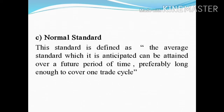The next standard is normal standard. This standard is defined as the average standard which it is anticipated can be attained over a future period of time, preferably long enough to cover one trade cycle. Normal standard is thus an average standard anticipated to be achieved.